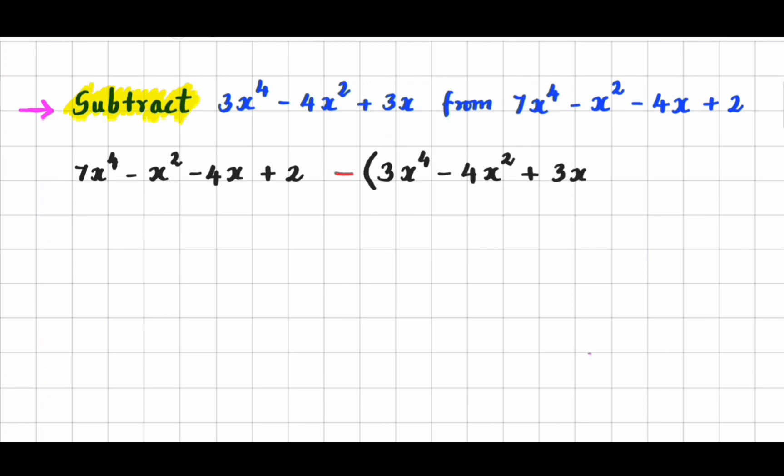Because this negative sign is for each term of the expression. That is for 3x to the power 4 minus 4x squared plus 3x.